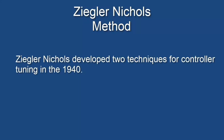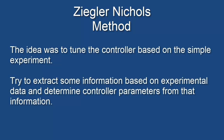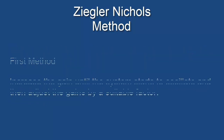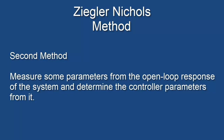Ziegler-Nichols developed two techniques for controller tuning in 1940. The idea was to tune the controller based on a simple experiment — to extract some information based on experimental data and determine controller parameters from that information. The first method: increase the gain until the system starts to oscillate and then adjust the gain by a suitable factor. The second method: measure some parameters from the open-loop response of the system and determine the controller parameters from it.